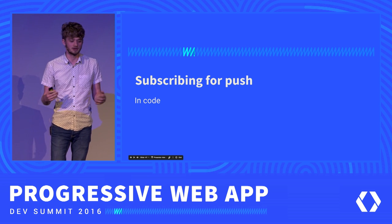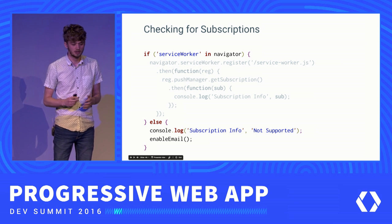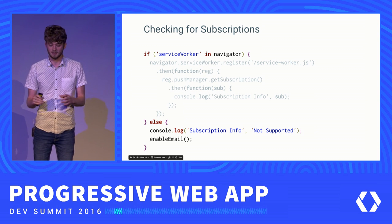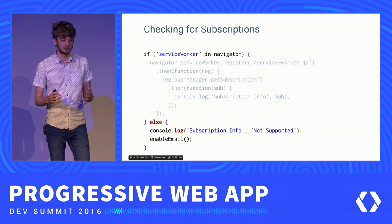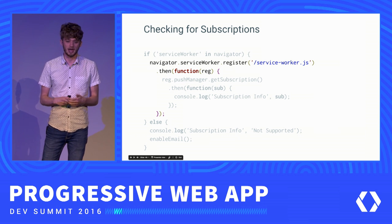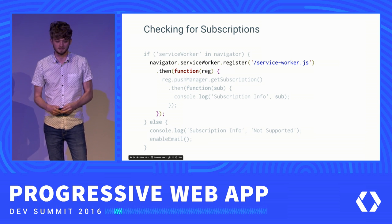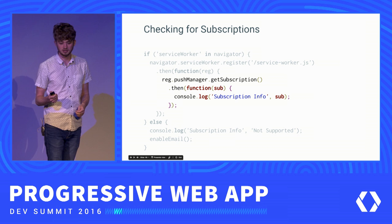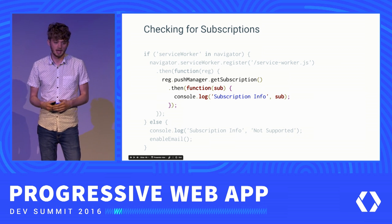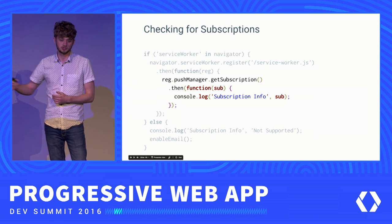Let's look at the code for subscribing for push notifications. The first thing we do is check whether the user is already subscribed. Because these are progressive web apps, we first verify that service workers are available on this client. If the service worker is available, we register it — if it's already registered, this returns the existing registration object. Then we call pushManager.getSubscription to get the existing push subscription for the user if one exists. Now we know whether they're subscribed, and can store this in a cookie or use it to decide whether to show an opt-in flow.